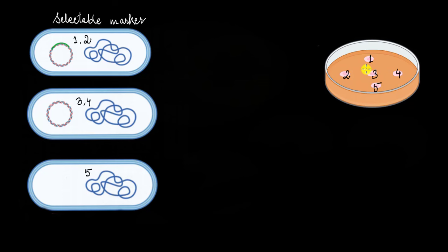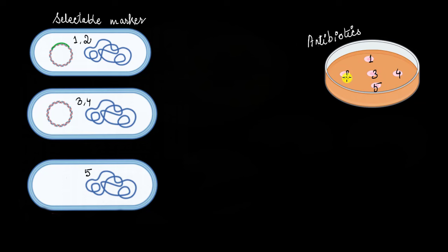Our goal should be to extract the first and second colony, but how would we know that in a lab? How would we differentiate? What if we find a way to stop the growth of the other three colonies — the third, fourth, and fifth — or maybe kill them? We know about a chemical substance that kills or stops the growth of bacterial cells, and that is antibiotics. How about we put some antibiotics into the medium? But wait — won't that kill the first and second colonies as well? Because those are bacterial colonies too, and we do not want those colonies to die because they have the recombinant DNA.